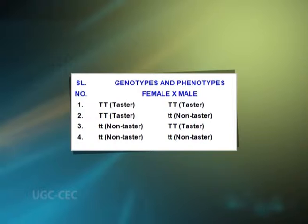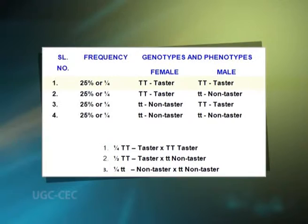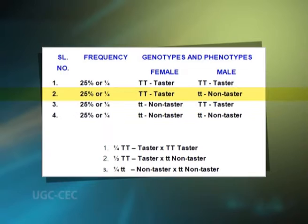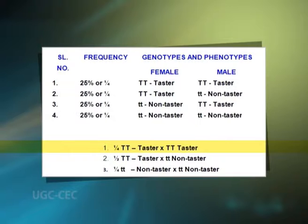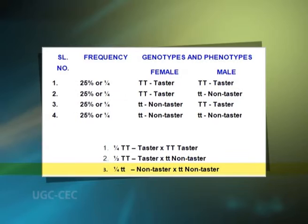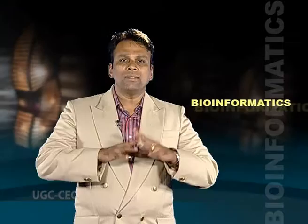Since tasters and non-tasters occur in equal numbers, the proportion of each of the above marriages in the population is 25 percent. Since marriages 2 and 3 are similar, their combined frequency is 1/4 + 1/4 = 1/2. The proportions of marriages in the population are: one, 1/4 taster × taster; two, 1/2 taster × non-taster; and three, 1/4 non-taster × non-taster. The same proportions can be obtained by the checkerboard method.